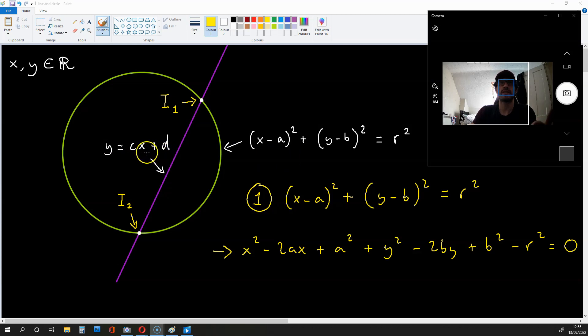And if we plug this value of x into the equation of this line over here, we get the y coordinates of these intersection points. So we want to plug cx + d into this equation over here for the value y. Now, before we do this, let's expand this equation over here.